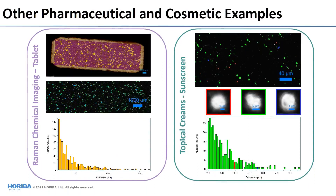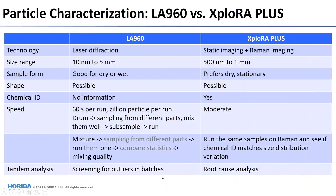There are more examples like this — more tablets, more powders. Another application is ointments, including topical ointments or topical creams. Again, spread thinly on a microscope slide and let dry, and you can identify and characterize particles and acquire Raman spectra for chemical identification. To conclude, this table shows a brief comparison between the LA-960 and the Xplora — laser diffraction and Raman microscope. Each has its own advantages. When you analyze your sample with both technologies, you get much better characterization and a deeper analysis of your samples.